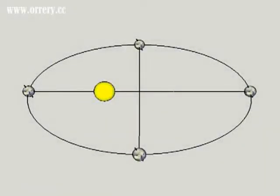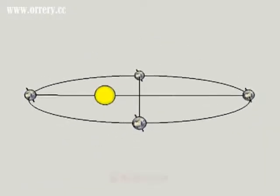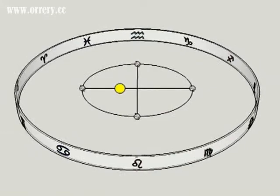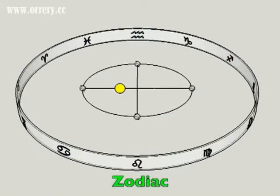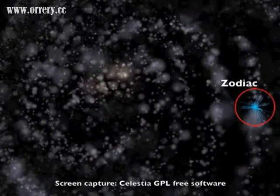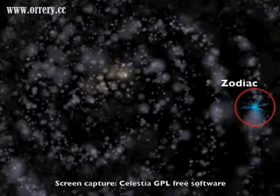The Earth revolves about the Sun in a plane called the ecliptic. The 12 constellations of fixed stars that intersect the ecliptic are called the zodiac. All the stars of the zodiac are actually our close neighbors compared to the size of our entire galaxy.